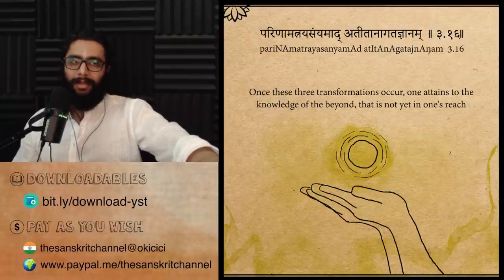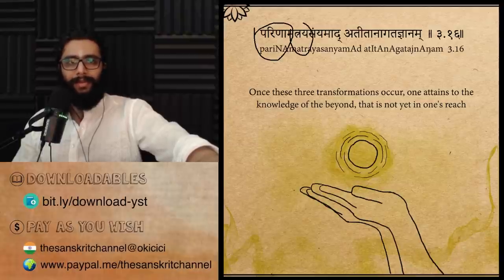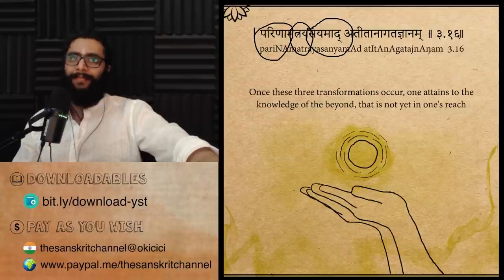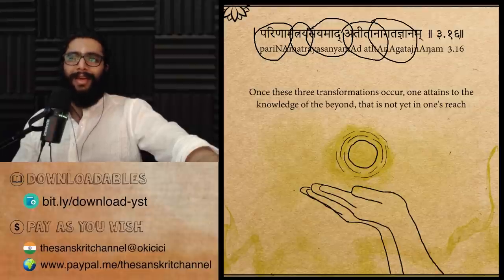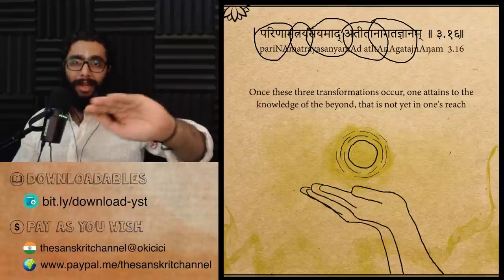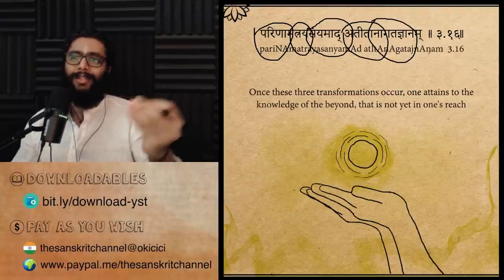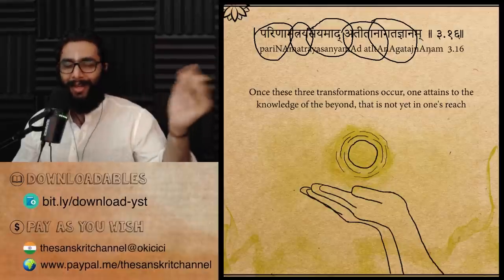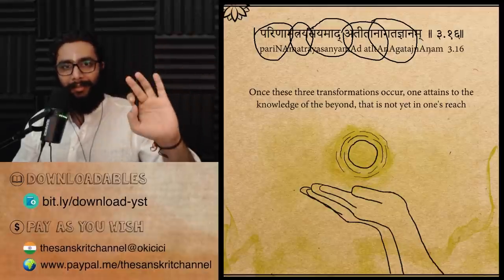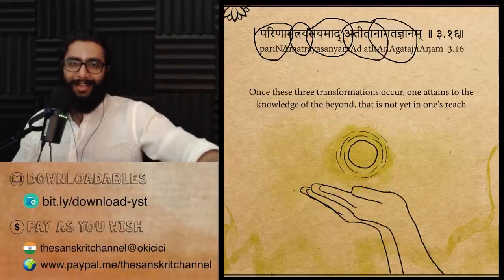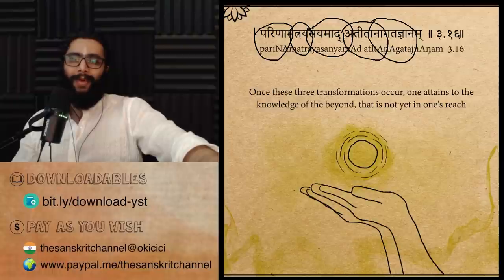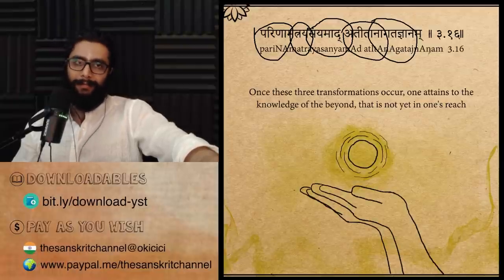The sixteenth sutra: Parinam Traya Sanyam Atita Anagata Jnanam. The words are: Parinam Traya — the three parinamas: Dharma, Lakshana and Avastha. Sanyama — doing Samyama on those. Atita is 'that which is past,' Anagata is 'that which has not yet come' — the future. Agatam means 'that which has come,' Anagatam means 'that which has not yet come.' Through the Samyama of the Parinam Traya, one gains the knowledge of the past and the future.